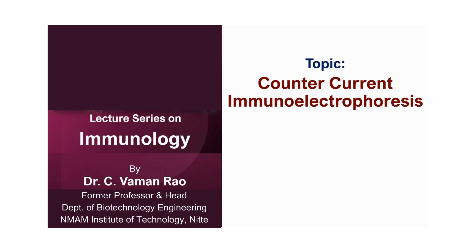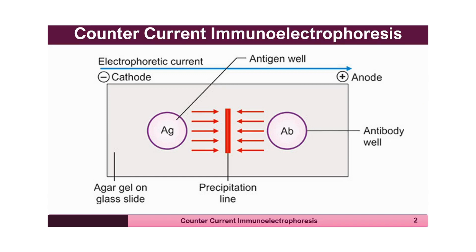I am going to explain counter current immunoelectrophoresis. This is another type of precipitin reaction demonstrated using antigens and antibodies, which are made to move in an inert material — agarose gel — in the presence of electricity using an electrophoretic apparatus.